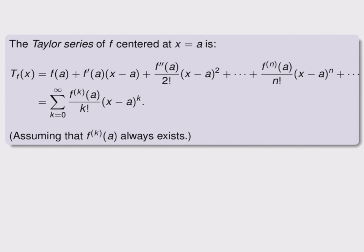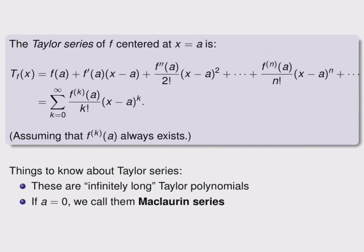If we let a Taylor polynomial go on forever, then we get the Taylor series of f centered at x equals a. This formula is exactly the same as before, but it goes on forever. These are infinitely long Taylor polynomials, and as such they can be perfect matches for the function — not merely approximations. If a equals zero, we have a special name for these: we call them Maclaurin series, after the person who first worked with them.